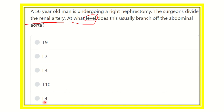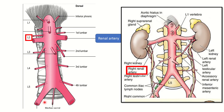Here you can see the abdominal aorta. The abdominal aorta starts from the aortic hiatus at the level of the T12 vertebra, then descends down, and at the level of the L4 vertebra it divides into the right and left common iliac arteries.